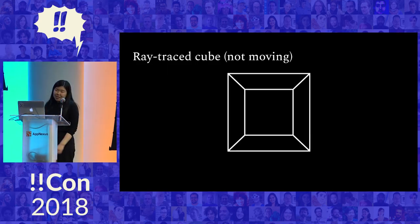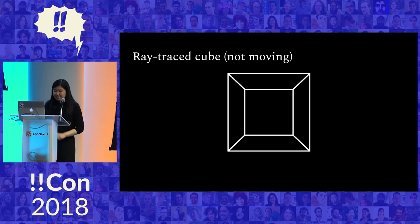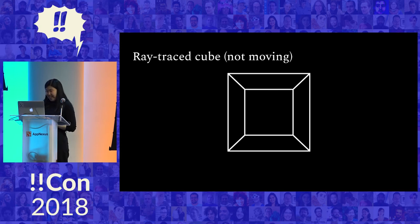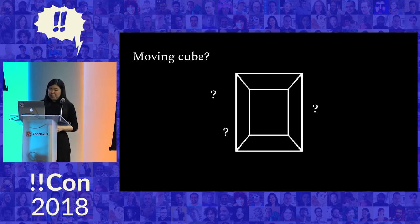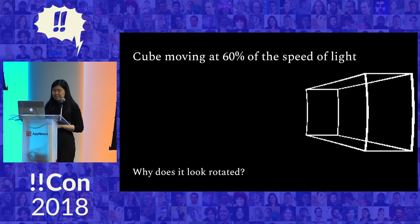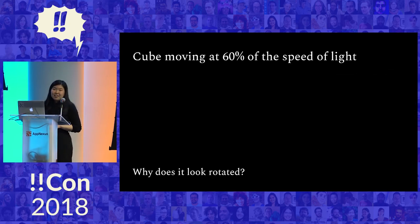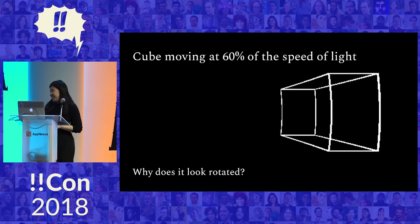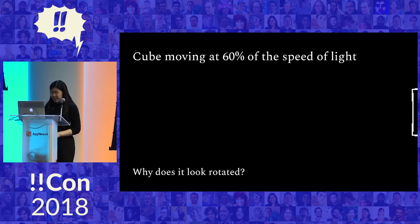Let's see some pictures. Here's what you get if you ray trace a cube — you're looking straight at one of the faces and the cube is not moving. Now let's say this cube is moving either to the left or to the right at some appreciable fraction of the speed of light. We were just talking about length contraction, so you'd expect the cube to get compressed in that direction — you'd probably expect it to look something like a squished cube. But here's the actual output of the ray tracer, taken at a bunch of different time slices: this is a cube moving at 60% of the speed of light, and it actually looks rotated.